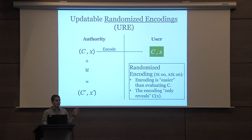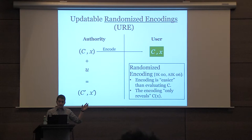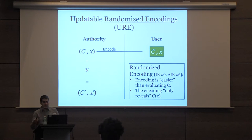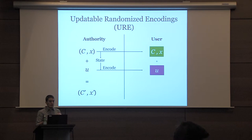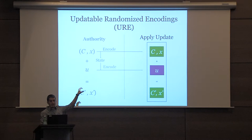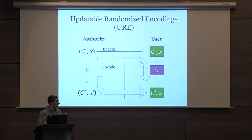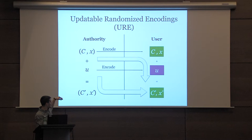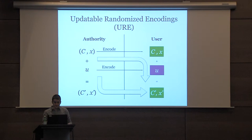A randomizing coding is a way to encode a circuit at an input — into this green box — where encoding doesn't take too much time; it's easier to do the encoding than to compute the circuit. But this encoding still only reveals the value of C of x and nothing more. We want to also find a way to encode the update — this is the main idea. We encode the update into this purple box on the right so that there's a way to combine the original randomizing coding and the encoded update to get a new randomizing coding for C prime, x prime. The correctness condition is that updating the encoding gives the same result as applying the update in the clear.